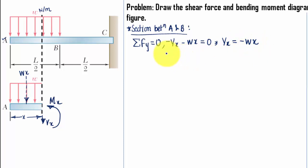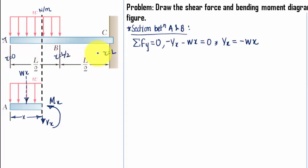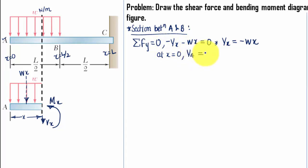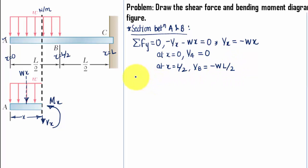Applying the limits: at X equals 0, the shear force at A equals 0. At X equals L/2, the shear force at B equals negative W·L over 2. It's that simple.